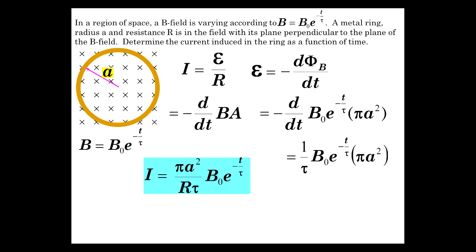It doesn't like change. So that means the B field that the induced current produces is going to have its magnetic field into the page to maintain what is originally there.